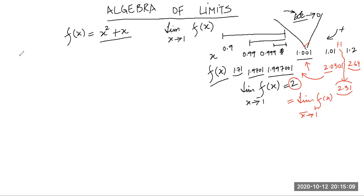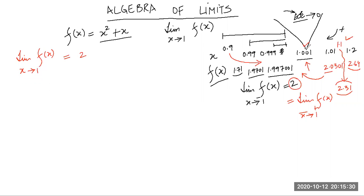So I can say the limit exists: limit of f(x) as x approaches 1 is equal to 2. I'm not writing negative or positive side, which means I have confirmed that the limit from the negative side and the limit from the positive side are converging. So this point is definitely 2. Limit exists.